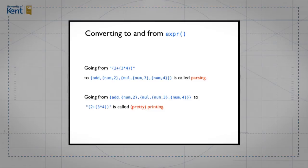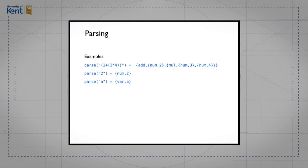Let's think first about what the types of the parsing function will be like. Here you see an example of applying parse to the example expression we've been looking at throughout this masterclass. You can also see examples of successfully parsing a number and a variable. So what we see is: we apply a parse function to a string and what we get back is an expression.